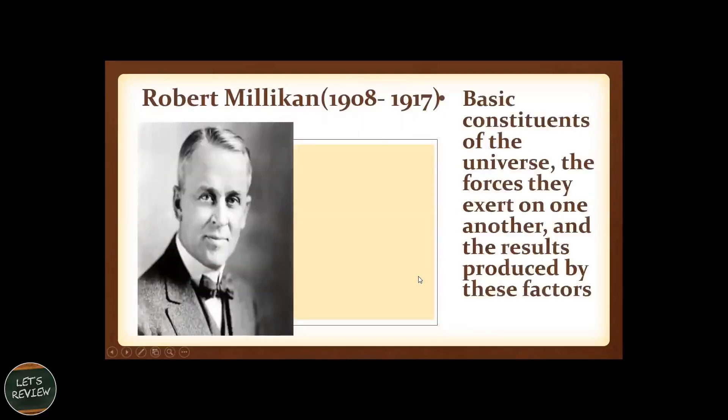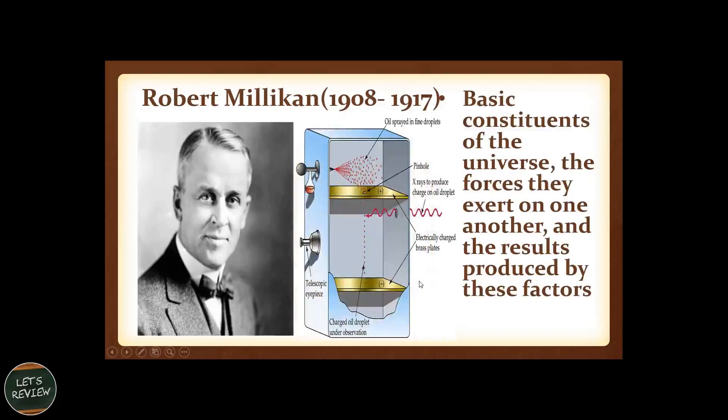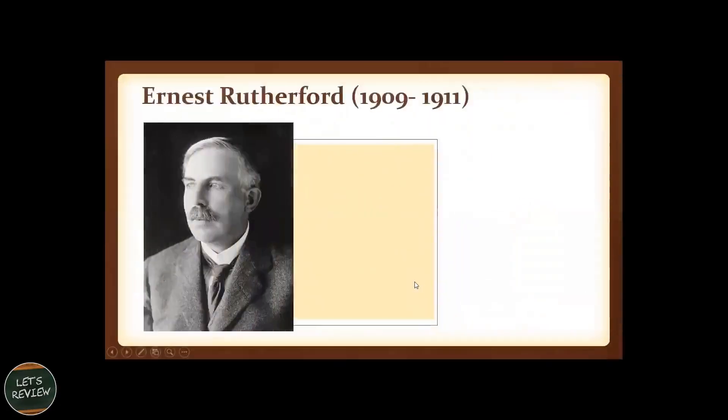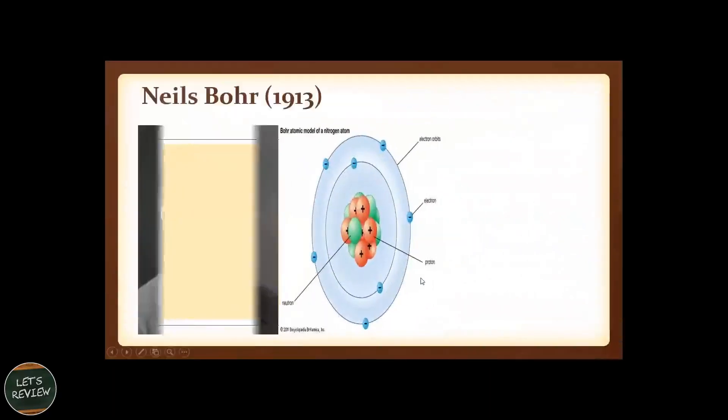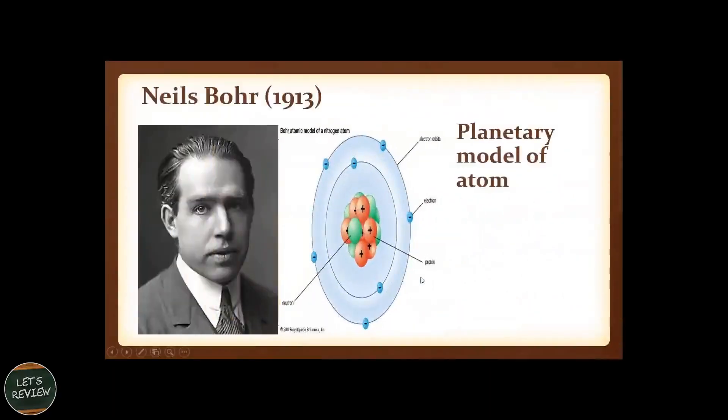Robert Millikan, 1908 to 1917, he formed the basic constituents of the universe, the forces they exert on one another, and the results produced by these forces. In 1909, Ernest Rutherford invented the detector for electromagnetic waves. And in 1913, Niels Bohr concluded, or made a diagram of the planetary model of the atom, his contributions to quantum mechanics.